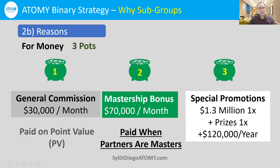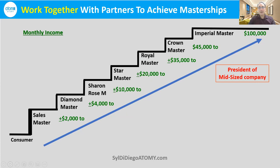Let's come back to the mastership bonus and the line strategy of how to work together with people in subgroups. As we go up the ladder of success from $2,000 as a sales master on the bottom to our Imperial Master of $100,000, we're going to be working together with these different subgroups. $100,000 a month is $1.2 million — equal to the salary of a president of a mid-sized company. So it pays to follow the best strategy and listen to your sponsors, who've been through this before and can help you grow as a leader to be successful with your subgroups.